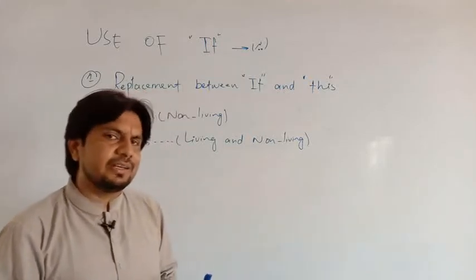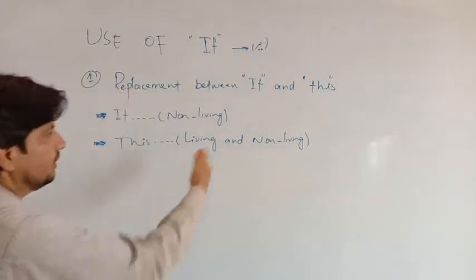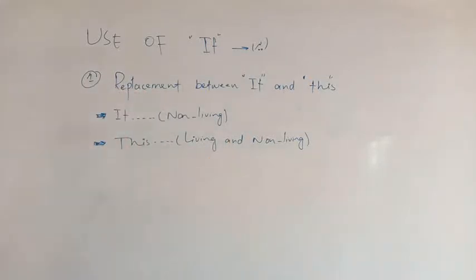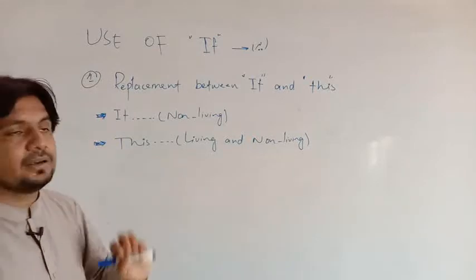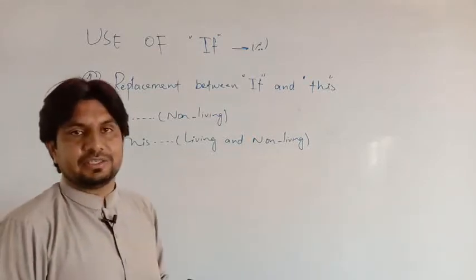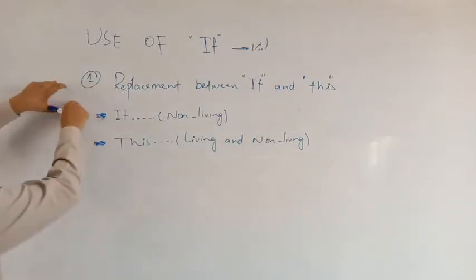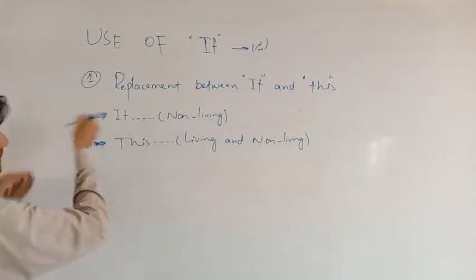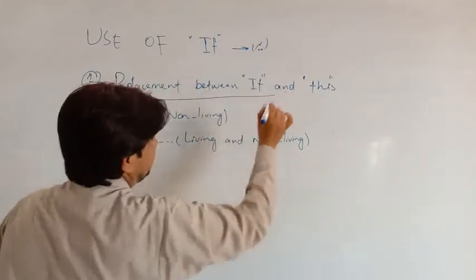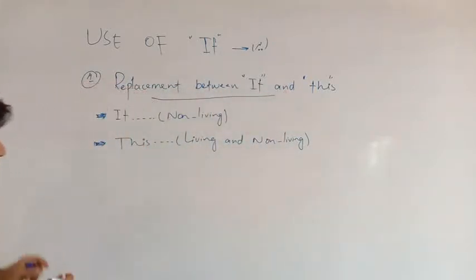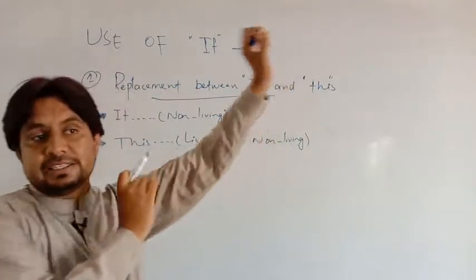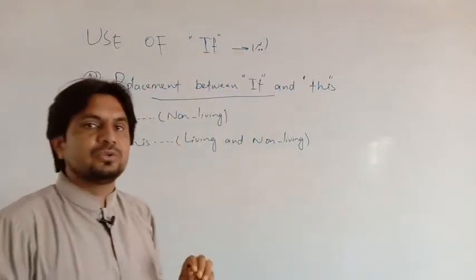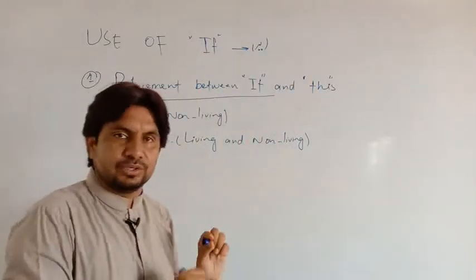Even though in modern English 'it' is sometimes used for living things, from a grammatical point of view you cannot use 'it' for a living thing. So the first rule is the replacement between 'it' and 'this': where you can place 'it' and where you cannot — specifically, when the subject is living, you cannot utilize 'it'.